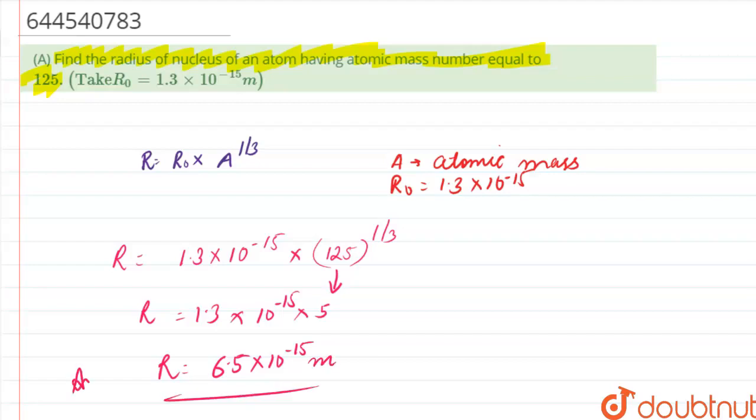So r is basically nothing but 6.5 into 10 raised to power minus 15 meter. And this is our answer for this question. So our answer in final, we will actually write it as 6.5 into 10 raised to power minus 15 meter. Answer.